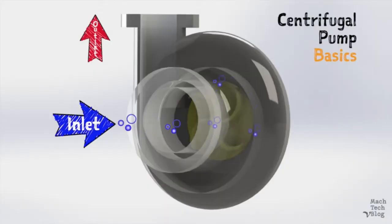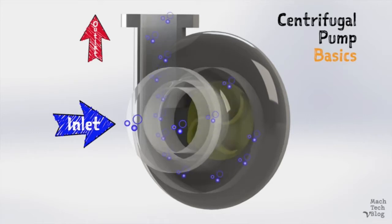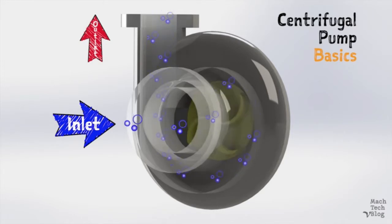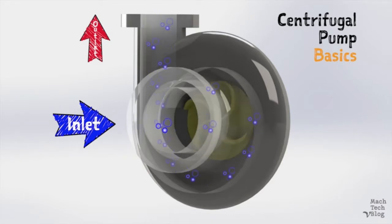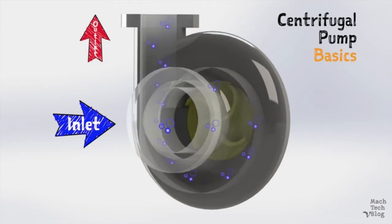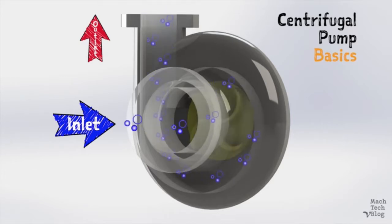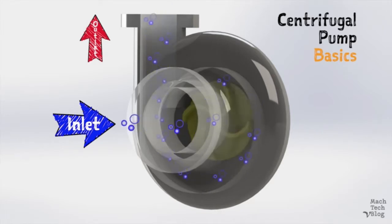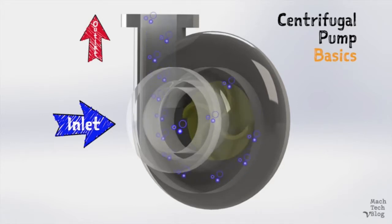Here's how a centrifugal pump works: fluid enters the pump at the center of the impeller, called the suction eye. Friction between the fluid and the rotating impeller causes the fluid to rotate — just like friction between the road and your tires propels your car forward. The rotating fluid is thrown to the outside by centrifugal force, picking up kinetic energy from the impeller. From the impeller, the fluid is released into the volute casing and directed to the discharge outlet and into the system.